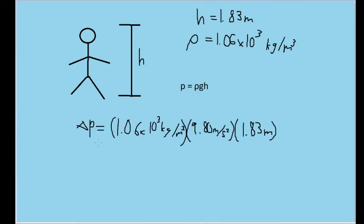We will simply plug in the values the problem gives us: 1.06 times 10 to the third power of kilograms per cubic meter for the density of blood, 9.80 meters per second squared for the acceleration due to gravity, and 1.83 meters for the height of the person, which also represents the height difference between the head and the foot.